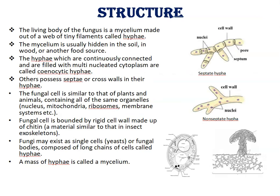The living body of the fungus is a mycelium made out of a web of tiny filaments called hyphae. You can see here in this diagram — these are hyphae. This mushroom, an edible fungus, has a body made up of mycelium. Mycelium is a group of hyphae, and mycelium is usually hidden in soil, in wood, or in other food sources, depending upon the source on which the fungus grows.